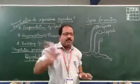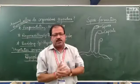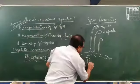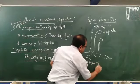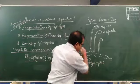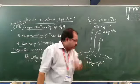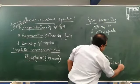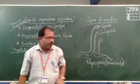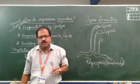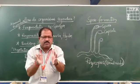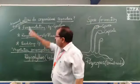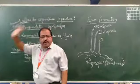This is called spore formation — also asexual reproduction in lower-grade animals, especially the fungi Rhizopus. Rhizopus is also called bread mould. It grows on moist bread and is a best example for spore formation. This is also asexual reproduction in lower-grade animals.